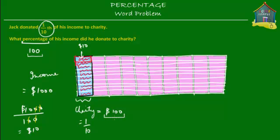There are 10 of these smaller units, so 10 times ten dollars equals one hundred dollars — the amount he gave to charity is still one hundred dollars, regardless of whether we divide income into 10 or 100 parts. If we divide into 100 parts, the charity fraction becomes 10 upon 100. Since we have a fraction with 100 in the denominator, 10 upon 100 equals 10 percent. The percentage of his income donated to charity is 10 percent.